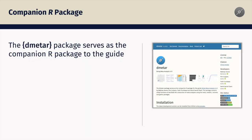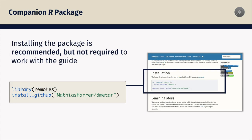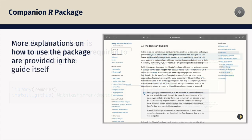The guide comes with a companion R package called Dimeta. This package encompasses all the datasets that we utilize in the hands-on examples featured in the guide, along with a few helper functions. To install the package on your computer, you can visit dimeta.proteclab.org, where you'll find the code required for installation. While installing the package is recommended, it is not necessary to work with the guide. Chapter 2 also provides further information on Dimeta.